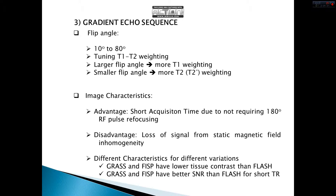If we analyze this type of sequence, we will see that the flip angle is in the range from 10 degrees to 80 degrees. This provides us with tuning T1 and T2 weighting. That is, a larger flip angle causes more T1 weighting, and a smaller flip angle causes more T2 weighting.